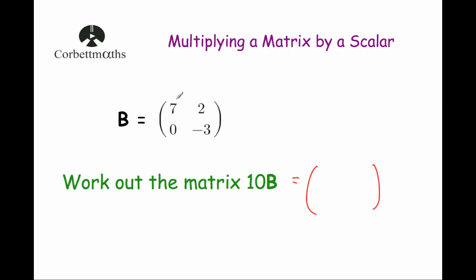We've got 7, multiplied by 10 gives 70. We've got the element 2, times 10 gives 20. We've got 0 — well, 10 times 0 is 0. And negative 3 — 10 times negative 3 is negative 30. And that's it.